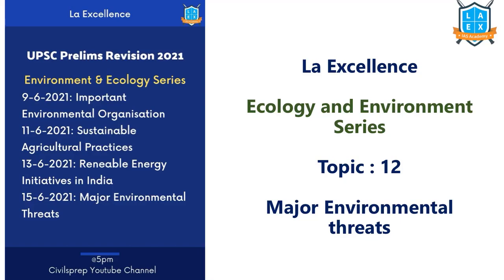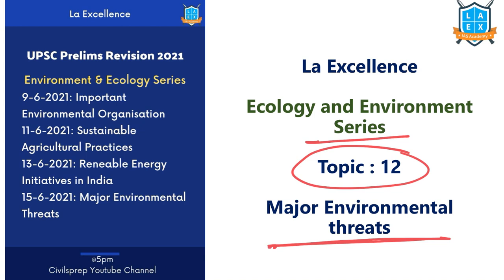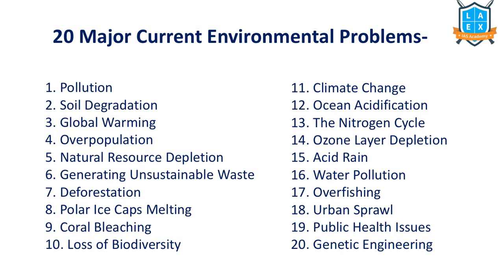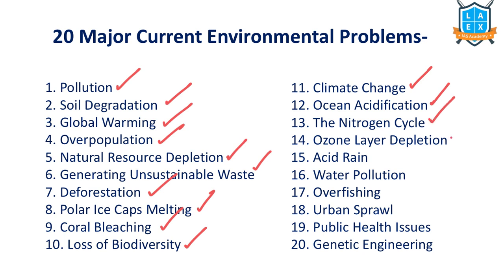Hello, welcome to LA Excellence. In our ecology and environment series, this is our last topic — the 12th topic — major environmental threats. We have listed down 20 major environmental problems or threats that we are facing, which includes pollution, soil degradation, global warming, overpopulation, resource utilization, natural resource depletion, unsustainable waste, deforestation, ice cap melting, coral bleaching, loss of biodiversity, climate change, ocean acidification, nitrogen cycle imbalance, ozone layer depletion, acid rain, water pollution, overfishing, urban sprawl, public health issues, and genetic engineering and its impact on environment.